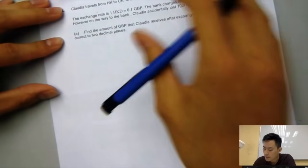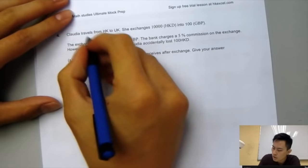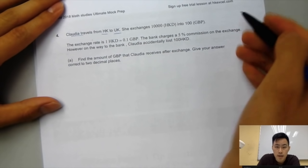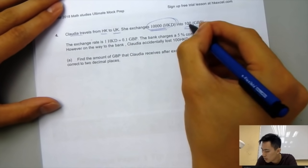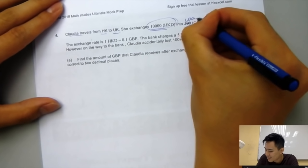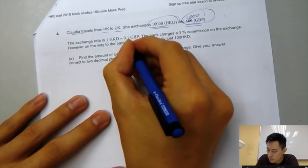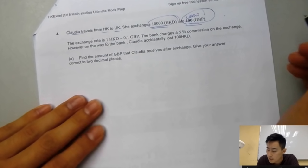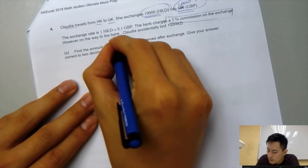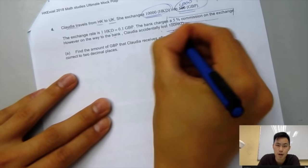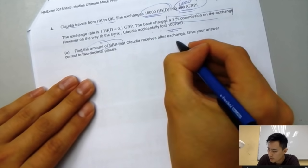Question 4, the last question in our part 2, would be on the exchange rate. Claudia travels from Hong Kong to the UK. She exchanged 10,000 Hong Kong dollars to actually 1,000 pounds. The exchange rate is 1 Hong Kong dollar equals to 0.1 GBP. The bank charged 5% commission rate of the exchange. However, on the way to the bank, Claudia accidentally lost 100 dollars.